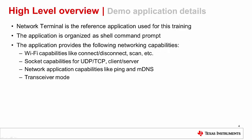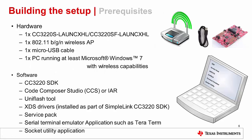It is important to understand the content of the reference application used for this tutorial. The demo application is built as a shell command prompt and provides Wi-Fi capabilities like connect, disconnect, and scan; socket capabilities for UDP or TCP client and servers; network application capabilities like ping and MDNS; and transceiver mode, which gives the user a direct interface to the radio layer.